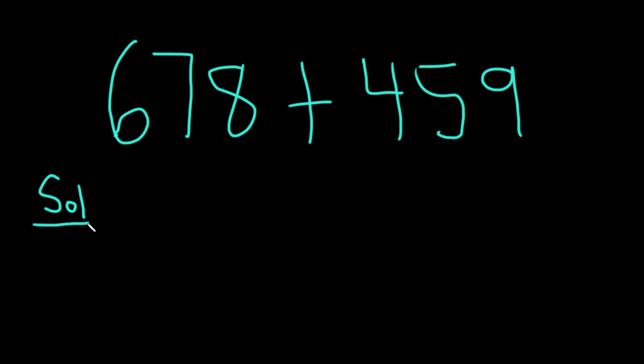To start this problem, we pick a number and write it on top. So I'm going to write the 678 first, since it's written first. And then right below it, you want to line up the other numbers. So 459, just line up all the digits, the ones, the tens, and the hundreds. Then you draw a line and you put a plus sign like this.